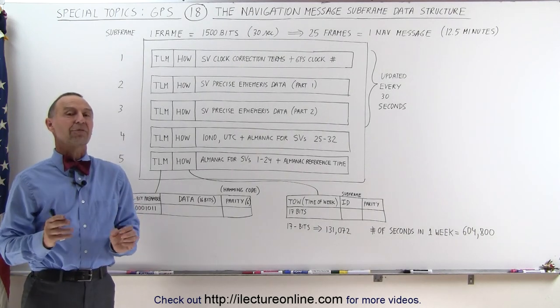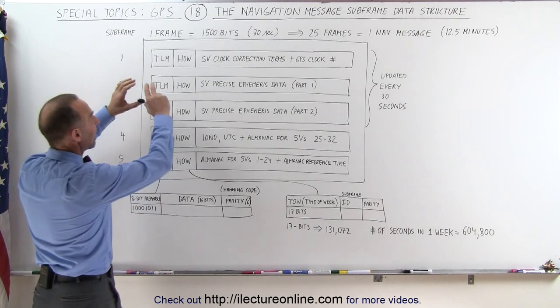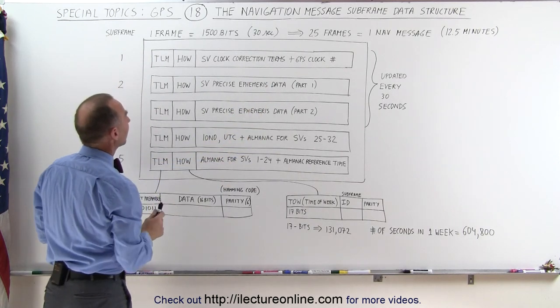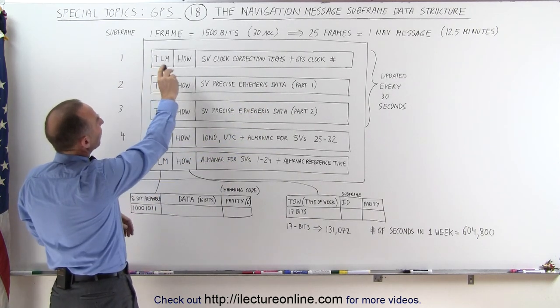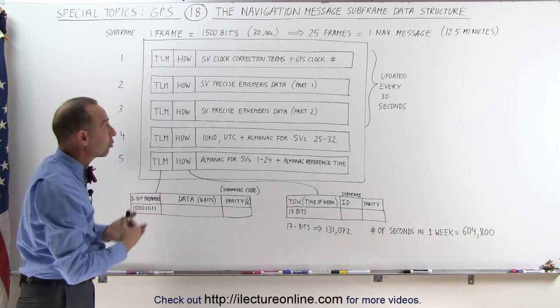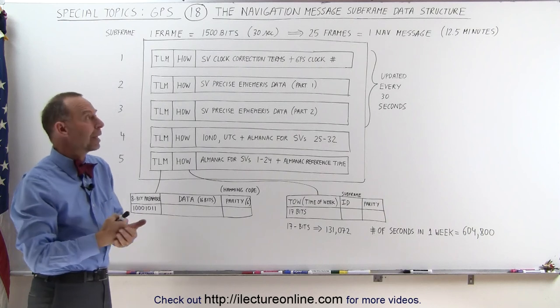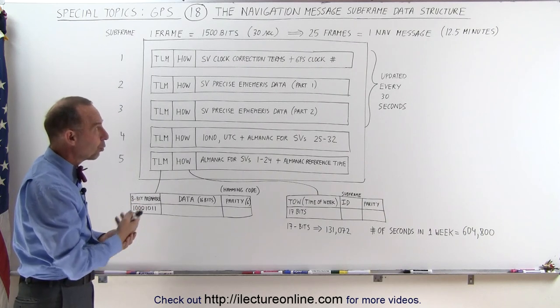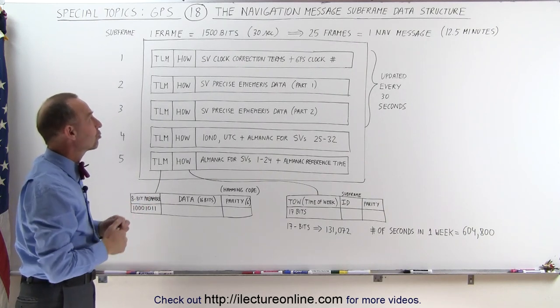Remember, there's five subframes in one frame, and here we have a physical picture of what that would look like. Notice that each frame contains 1500 bits, which requires 30 seconds for the satellite to transmit. 25 frames make up the entire navigation message, which takes 12 and a half minutes total to transmit.